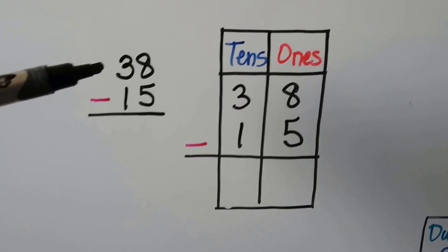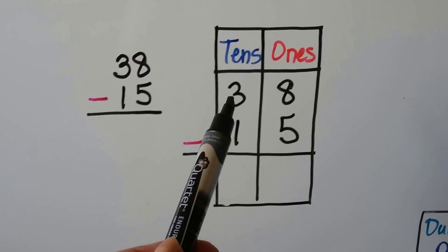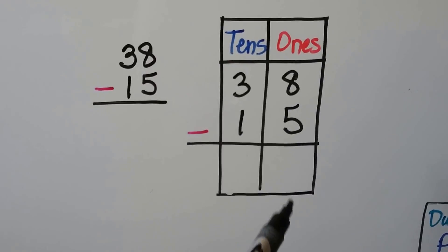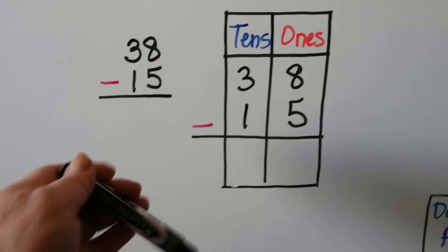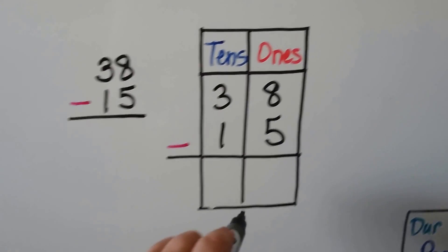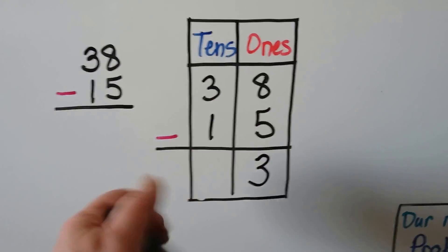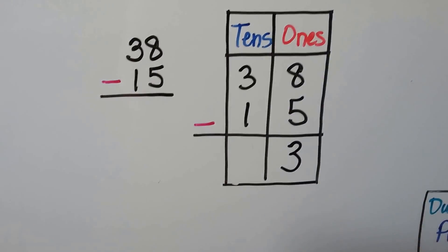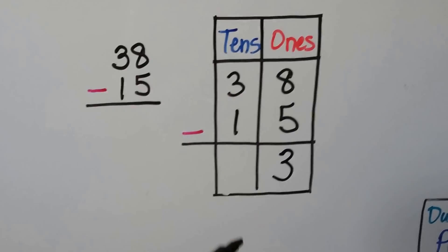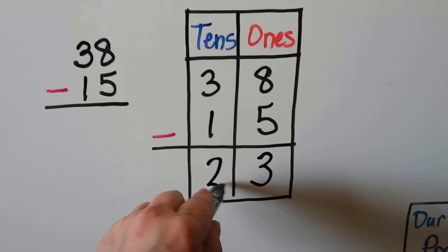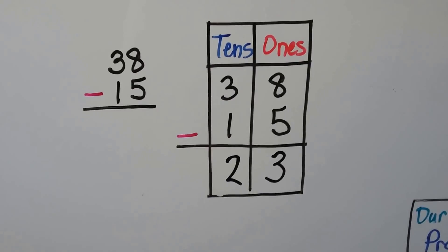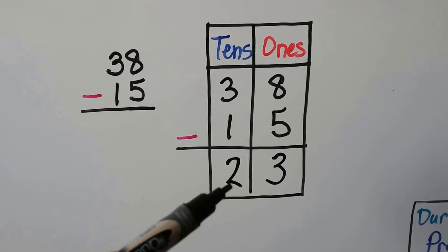Here we have 38 minus 15. We have 3 tens and 8 ones and we want to take away 1 ten and 5 ones. We start in the ones place. We have 8 and we want to take 5 away. We can start with 8 and count back to 5: 8, 7, 6, 5. That's 3. We can also start with the 5 and count up to the 8: 5, 6, 7, 8. That gives us 3. So we know it's definitely a 3. Now we have 3 tens and we want to take away 1 ten. 3 minus 1 is 2. So we know that 38 minus 15 is equal to 23. The difference between 38 and 15 is 23.